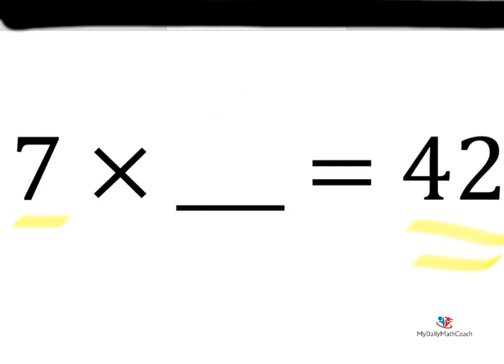But let's see, if you were to put in 4. Does 7 times 4 equal 42? No, that's 28. How about let's jump up to 7? 7 times 7 is 49. I know I have to be less than 49. And what happens if I put a 6? 7 times 6 is 42. And there's your answer.